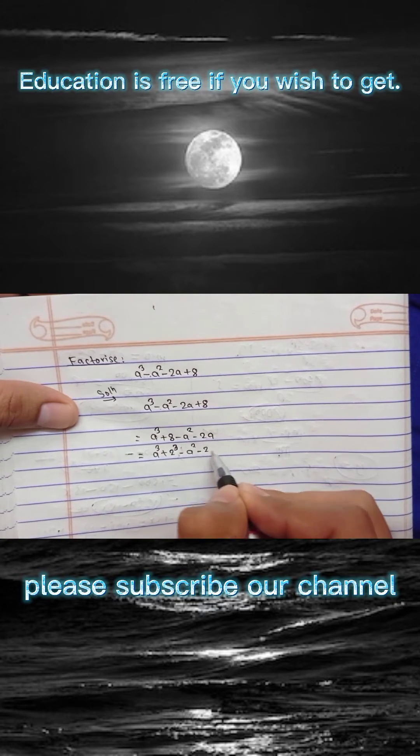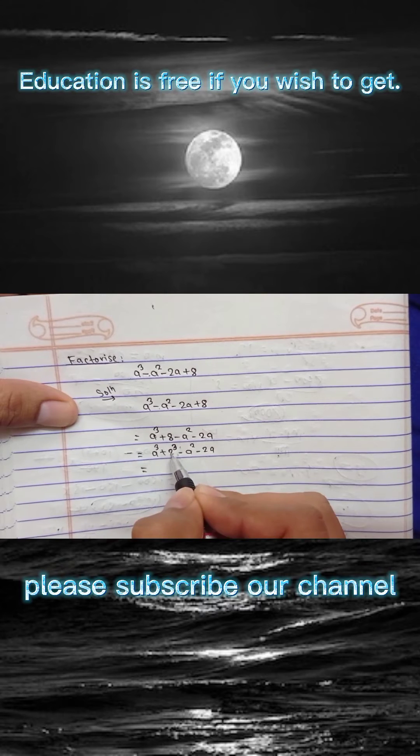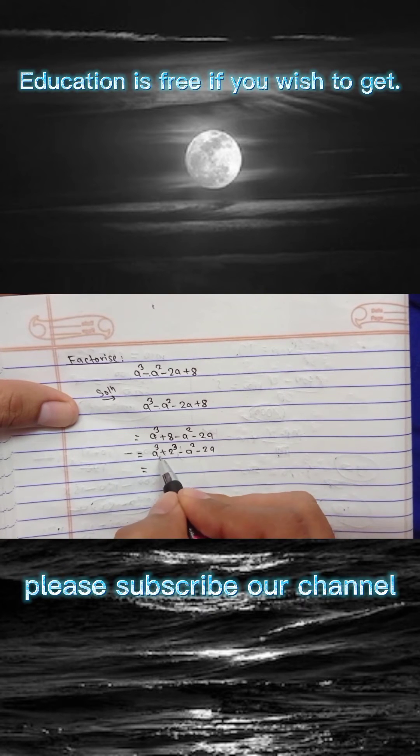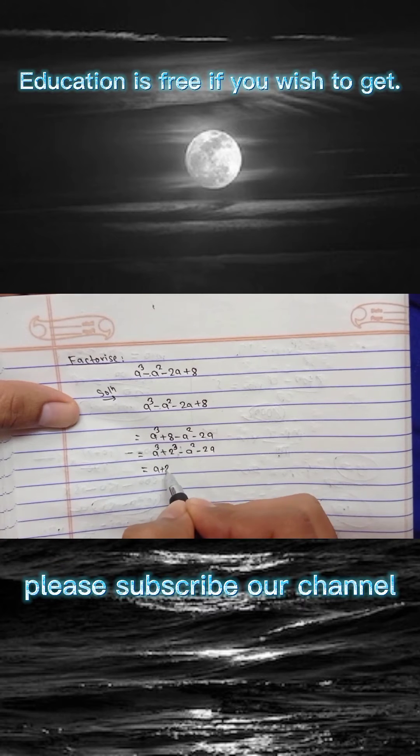Write it as it is. And the next step you can apply formula here a³ plus b³. a is a and 2 is considered as b, so if you apply the formula a³ plus b³, then you get here a plus b.